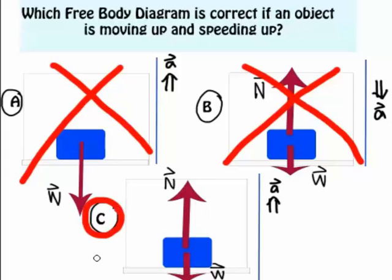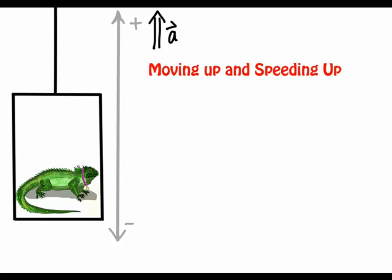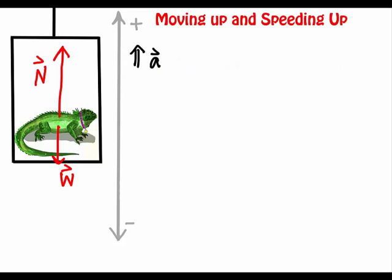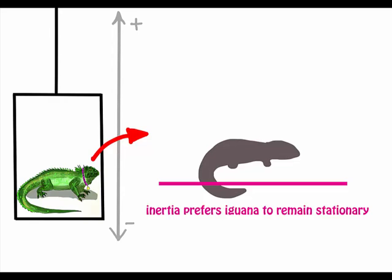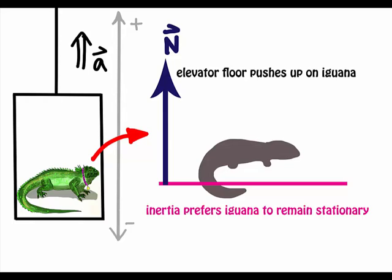Now, we can return to our question and see how this applies. The elevator is moving up and speeding up. If it's moving up, this means we're starting from rest from a lower floor. Inertia would prefer the iguana to stay stationary, but the elevator floor must push up on the iguana to accelerate upwards because the elevator and the iguana move together.